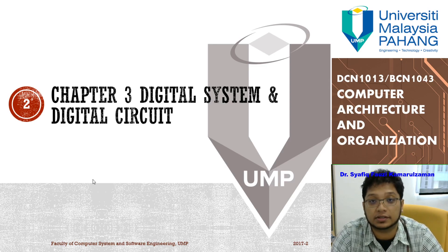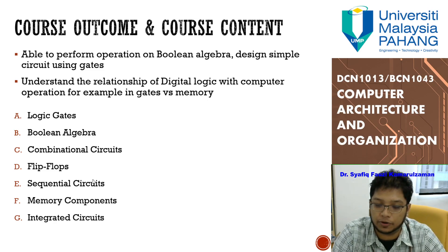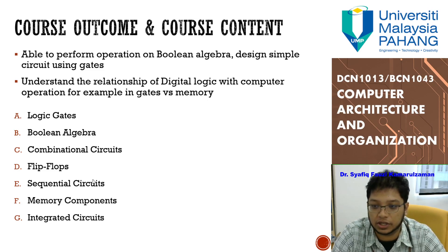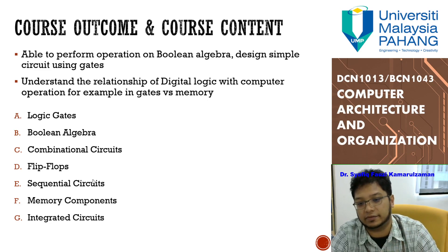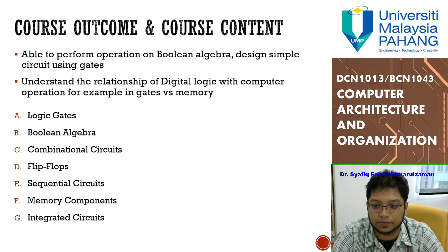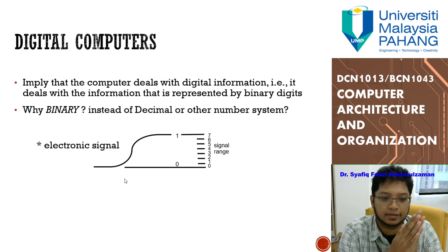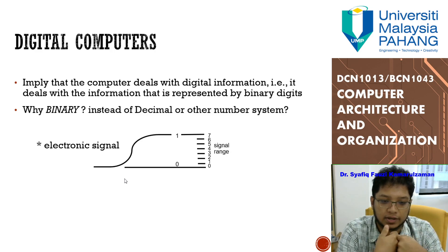Today we are going to look at Chapter 3 on Digital Systems and Digital Circuits. In this chapter, we will discuss how to perform operations on Boolean algebra and how to design simple digital circuits using gates. We will also understand the relationship of digital logic with computer operation, for example gates versus memory. We have around seven topics: logic gates, Boolean algebra, combinational circuits, flip-flops, sequential circuits, memory components, and integrated circuits.